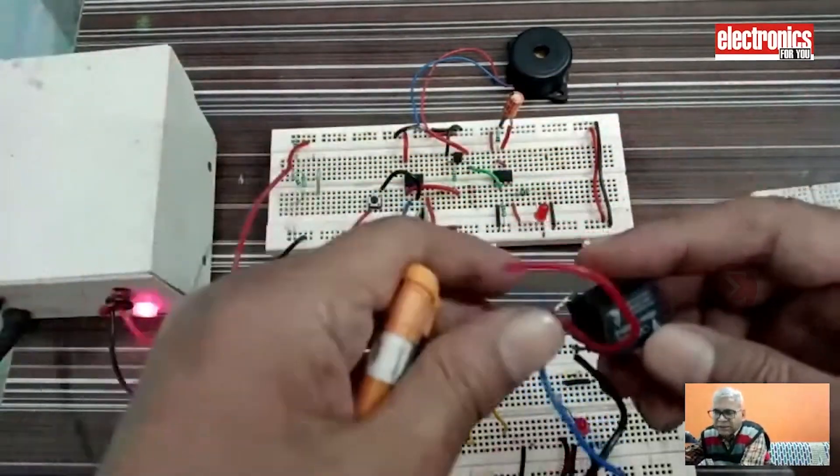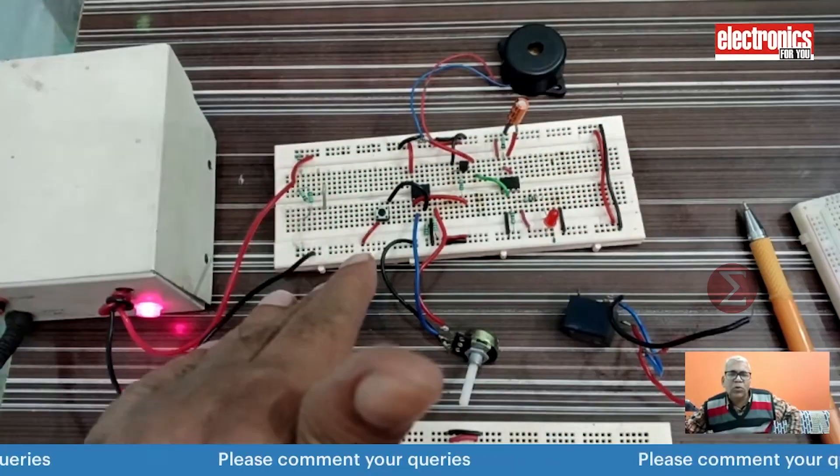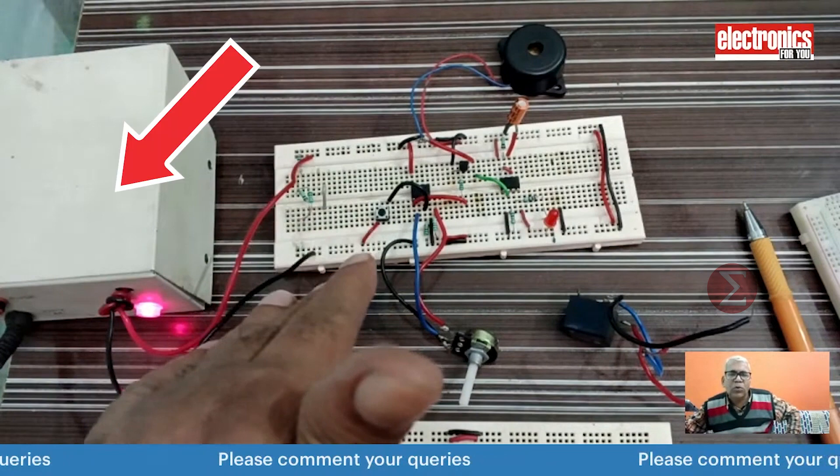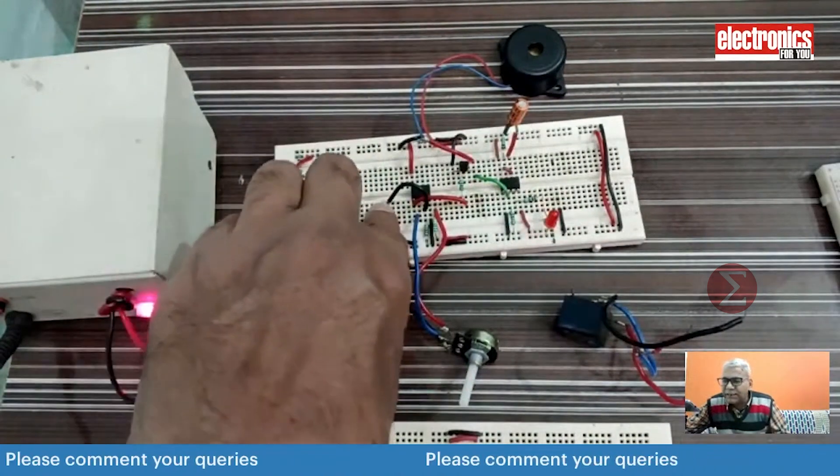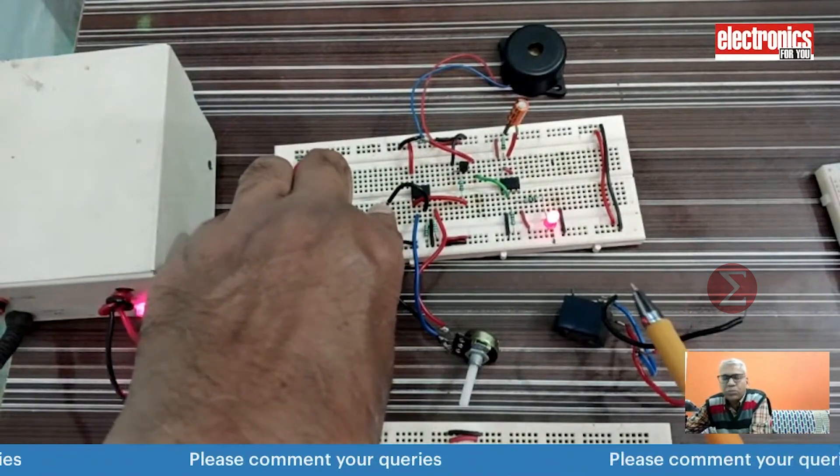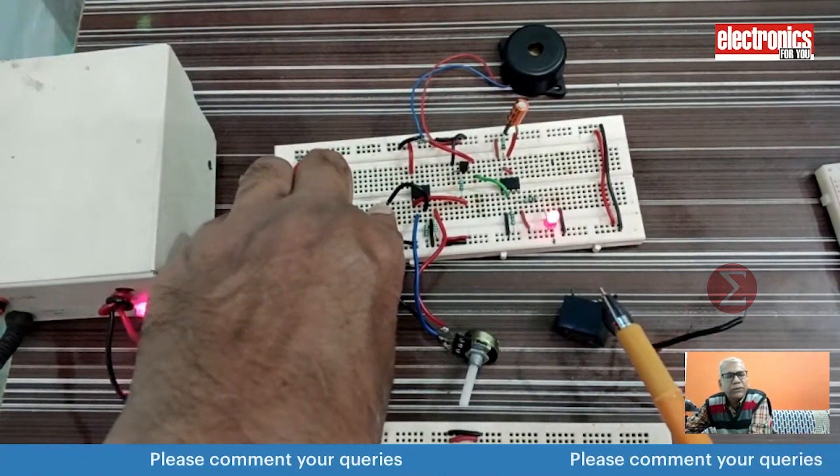Let us see a demonstration of this prototype circuit. We have connected the power supply to our circuit. Let's press this push button. When I press this push button, it means there is a gas leakage in the kitchen.